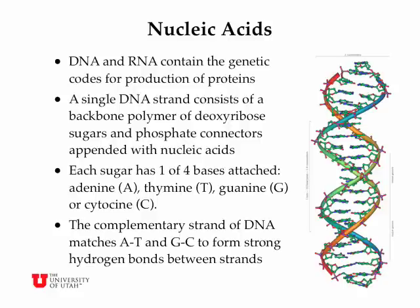Nucleic acids come in two basic varieties: DNA and RNA. They contain the genetic code for production of proteins. A single DNA strand consists of a backbone polymer of deoxyribose sugar and phosphate connectors, and each of the sugars is connected to a base. The base can be one of four different bases: adenine, thymine, guanine, or cytosine, abbreviated A, T, G, and C. DNA comes in a double-stranded variety of complementary strands where every time there's an adenine on one chain, there's a thymine on the other chain. Similarly, every time there's a guanine on one chain, there's a cytosine on the other chain. These strands form very strong hydrogen bonds between the bases, which keeps this double helix in place.